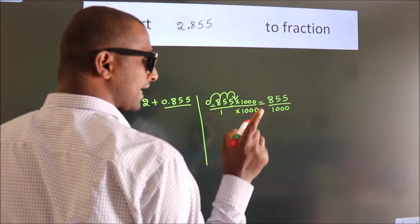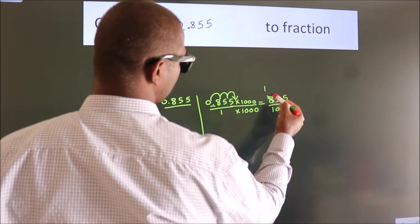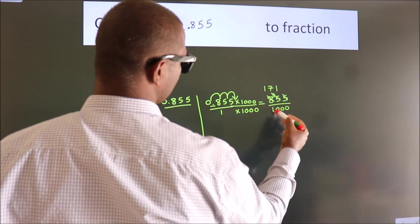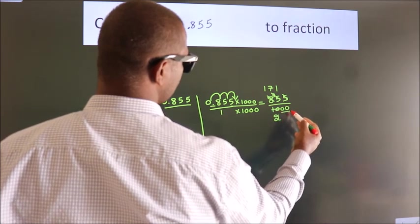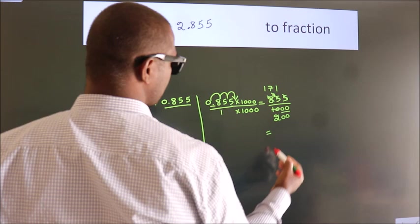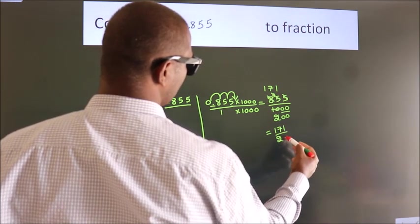Now I cancel with 5. 5 into 1, 5 into 7, 5 into 1, 5 into 2. These 0s as it is down. So the fraction we got is 171 by 200.